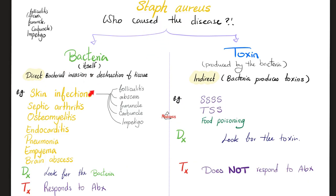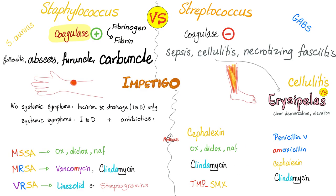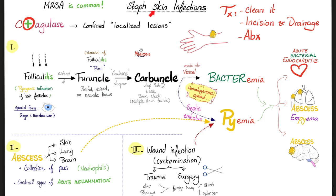Diseases caused by staph aureus bacteria itself: skin infections, abscesses, impetigo, osteomyelitis, septic arthritis, pneumonia, and endocarditis. Toxin-caused diseases: SSSS by exfoliative toxin, toxic shock syndrome by TSST-1, and food poisoning by enterotoxin A. Skin infection progression: folliculitis → furuncle/boil → coalesce multiple furuncles → carbuncle (deeper, on back and neck with multiple sinus tracts) → bacteremia → septic embolus/pyemia → endocarditis, lung abscess, empyema, cerebral abscess, meningitis.